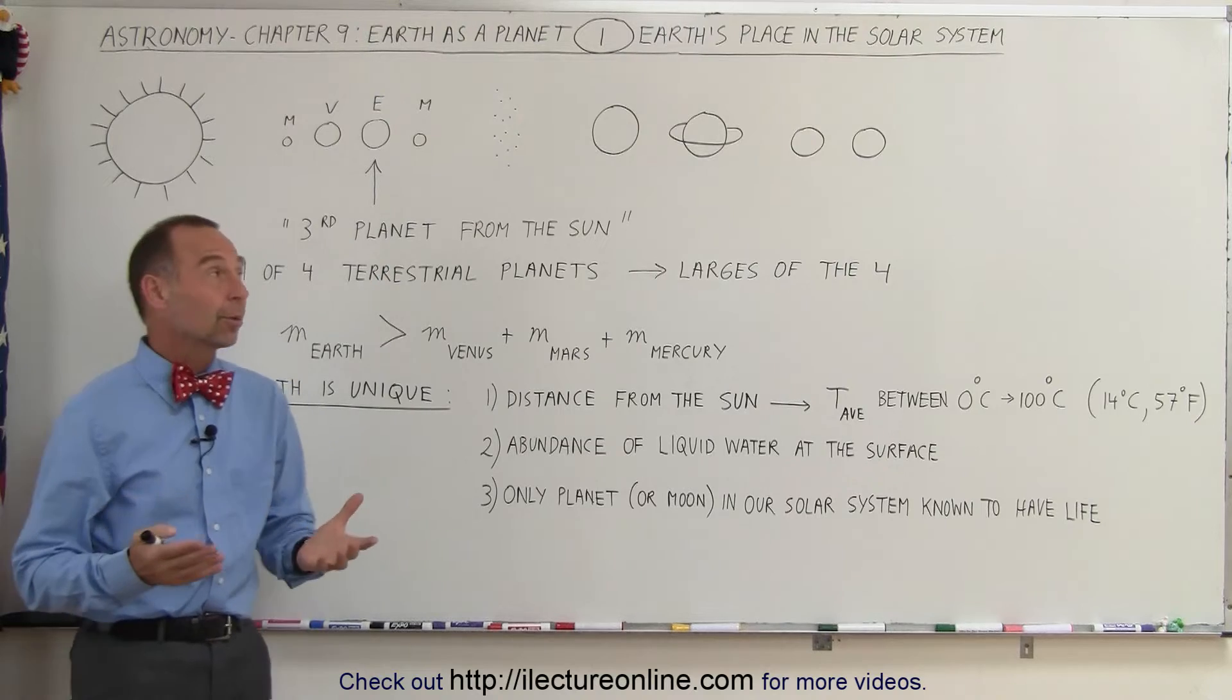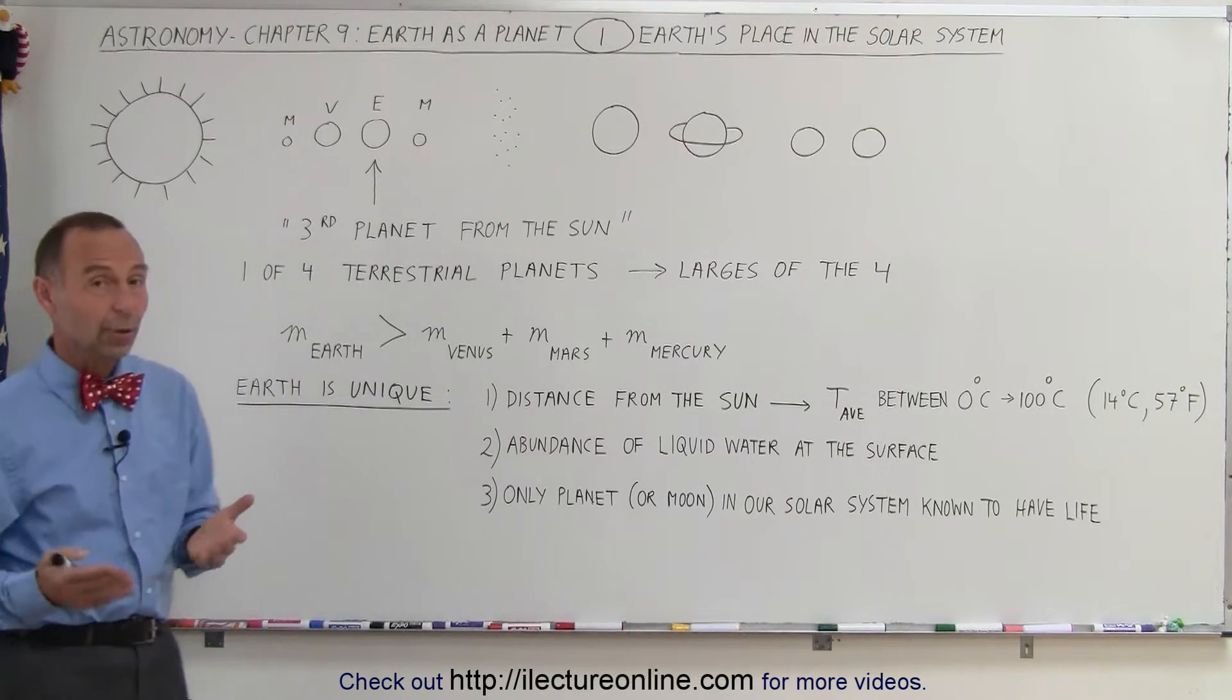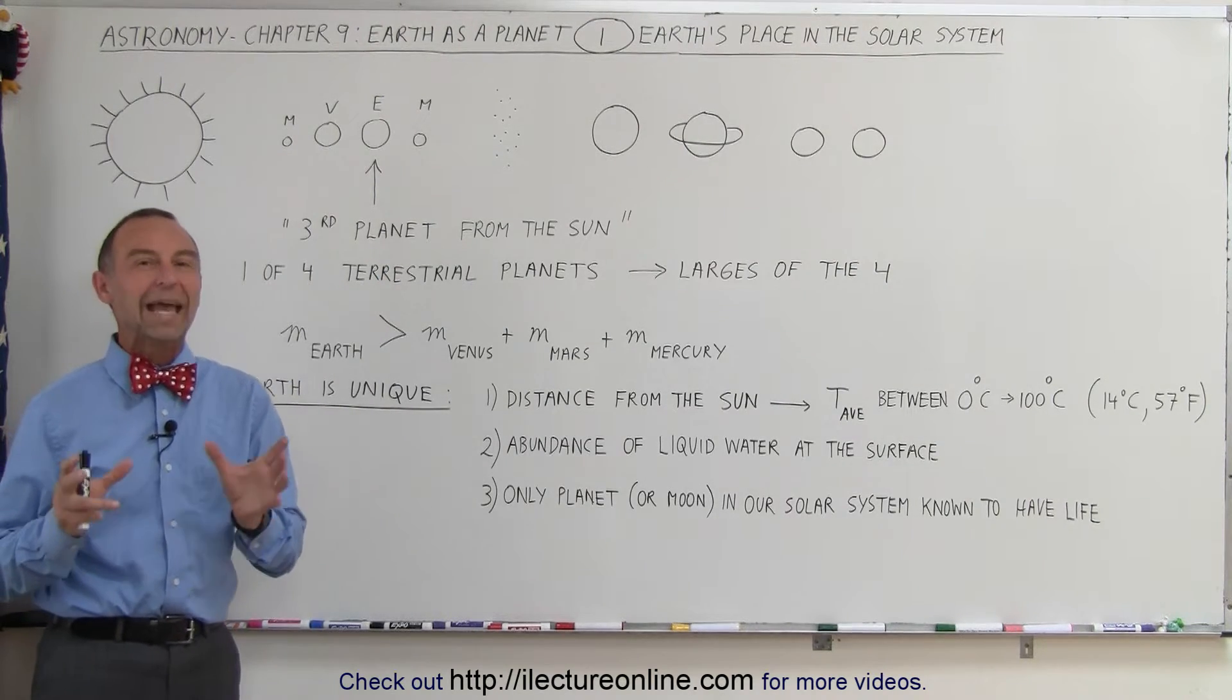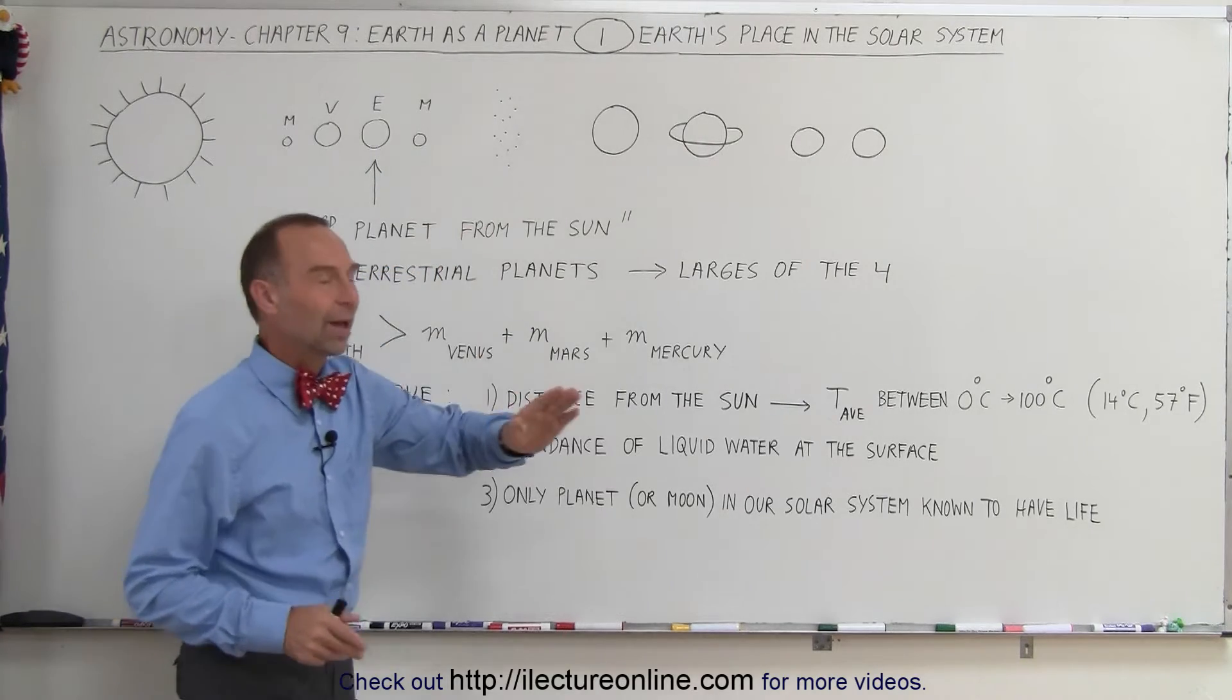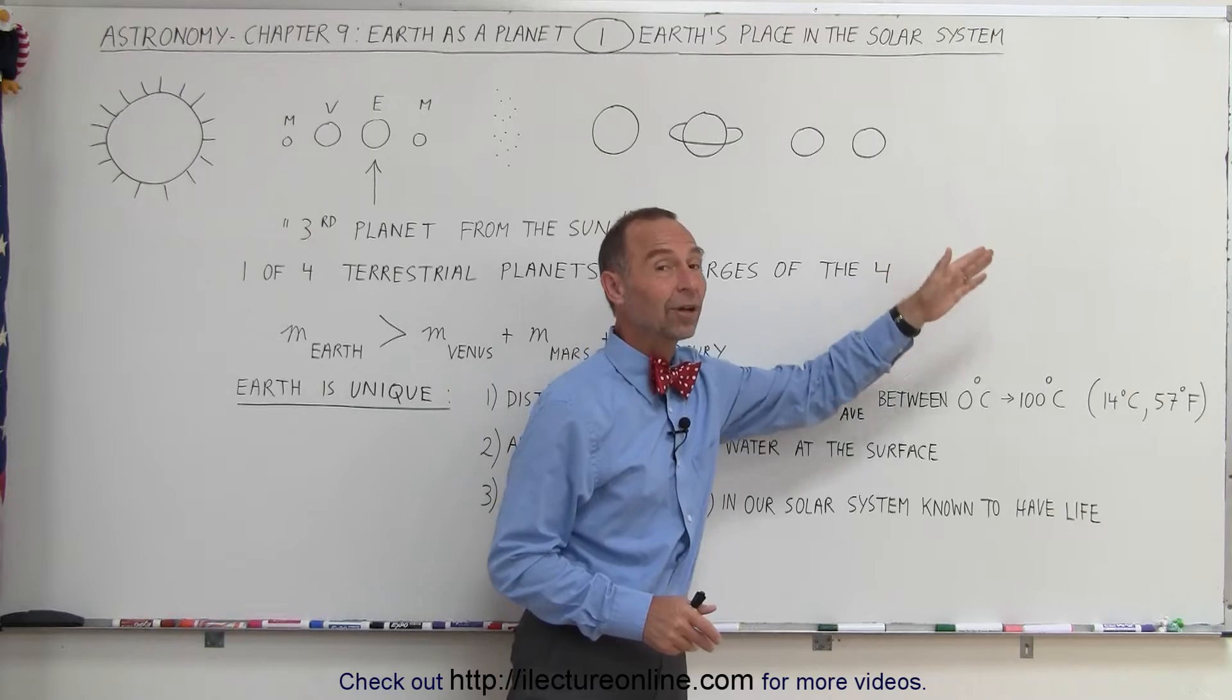So let's start out with where the Earth belongs in our solar system. Notice today we consider that we have eight planets in the solar system. We also have an asteroid belt, and of course we have what we call the trans-Neptunian objects.